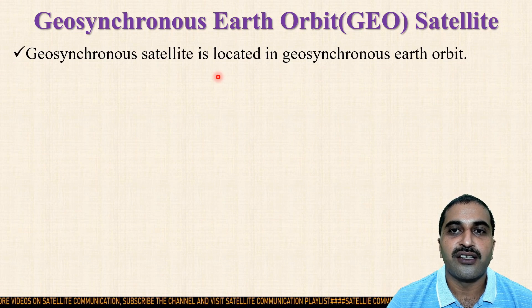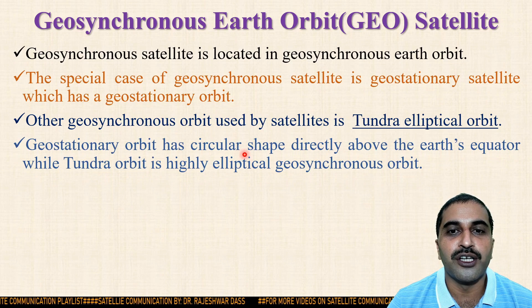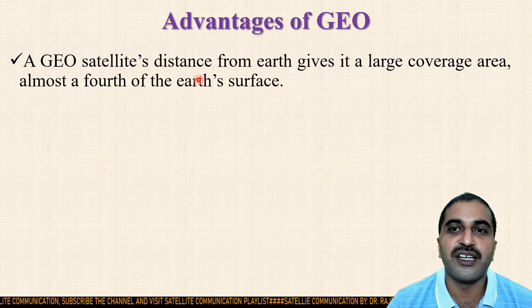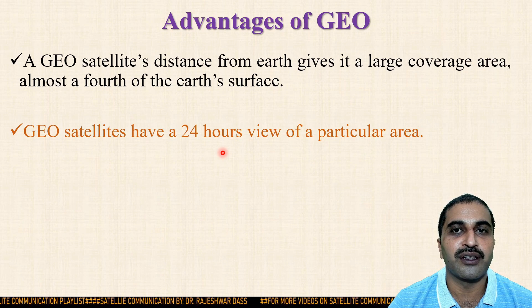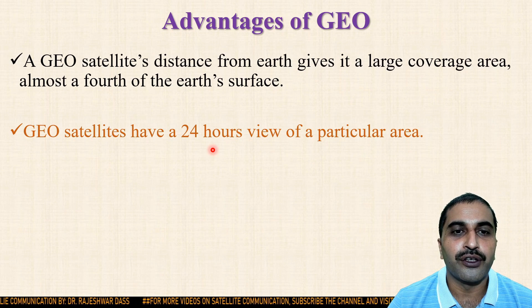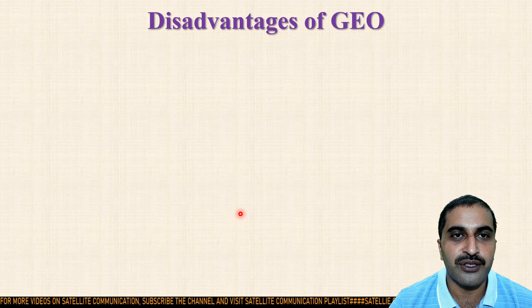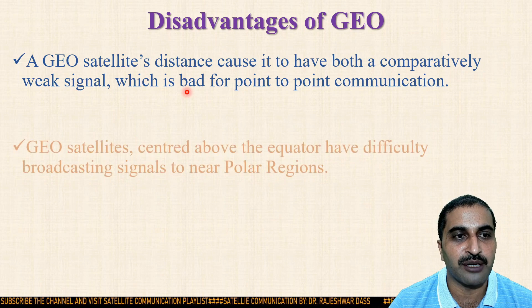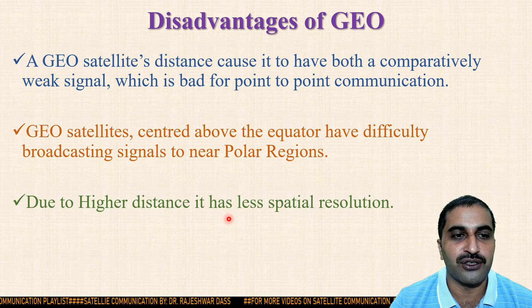Next is geosynchronous earth orbit satellite. GEO satellites are located in geosynchronous earth orbit. The special case is the geostationary satellite, which has a geostationary orbit at an altitude of 35,800 km from the earth's surface. Geostationary orbit is circular and directly above the earth's equator, while tundra orbit is a highly elliptical geosynchronous orbit. Advantages: a GEO satellite's distance gives it a large coverage area — almost one-fourth of the earth's surface. It has a 24-hour view of a particular area, and the relative velocity between the satellite and the earth is approximately zero, so Doppler shift compensation is very minimal. Disadvantages: comparatively weaker signal, difficulty broadcasting near polar regions, and less spatial resolution.